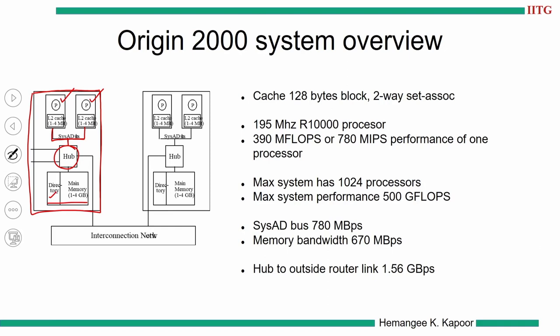Recalling from our earlier discussion of directory protocols, the directory information is stored with the home node and the home node's information is kept with main memory. Every processor has a 4 MB cache with 128-byte blocks and is two-way set associative. The processors are 195 MHz R10000 processors and give a peak performance of either 390 MFLOPs or 780 MIPS. Connecting several such boards to an interconnection network improves system-level performance. The maximum number of processors that can be connected in an Origin 2000 system is 1024, meaning 512 boards.